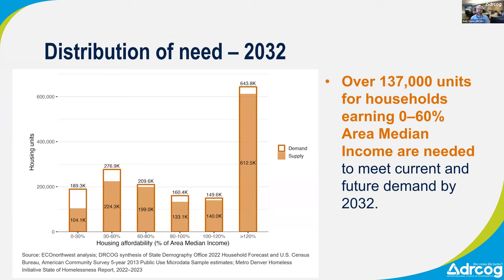Here's what that looks like out to 2032: we're forecasting total demand in different income groups relative to area median income. The total demand is shown in the dark orange outlined area, and we're comparing it to supply affordable at price points that would keep households from being cost-burdened, shown as the shaded orange area. The gap between the shaded area and the border is the need. The biggest gaps in the forecast are in the zero to 30% and 30% to 60% area median income categories.